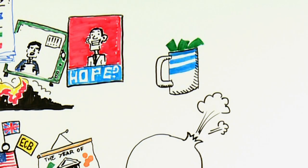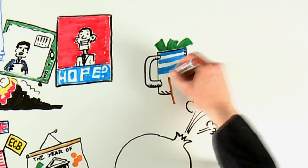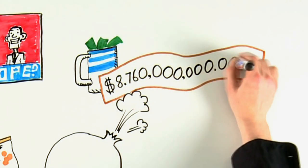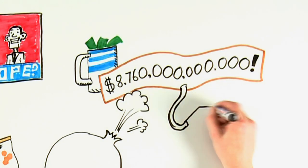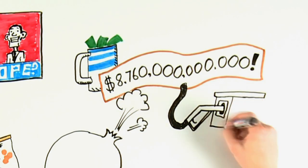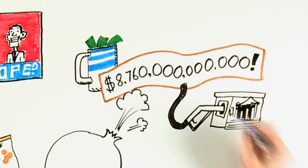Now let's just get a handle, as average citizens, on how much money has been printed in our name. In the last three and a half years, Britain, Europe, Japan and the US have pumped $8.7 trillion into the banking system to save the banks.